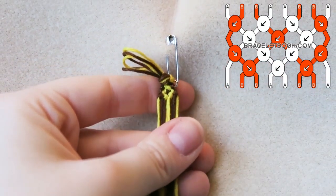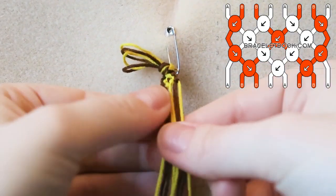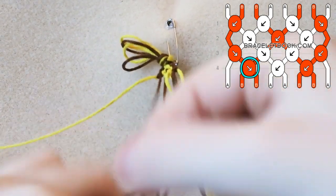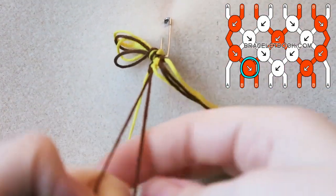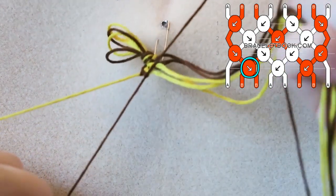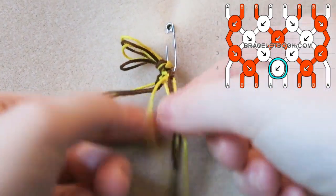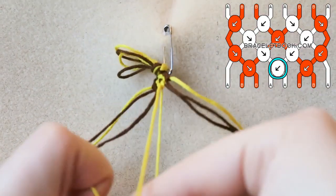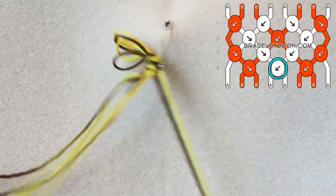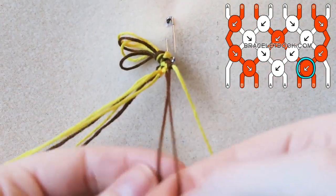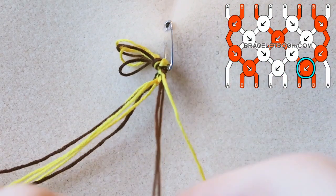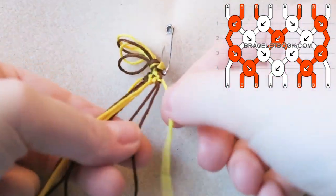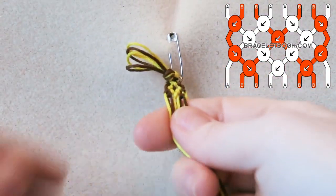We can already see a diamond taking shape, which is very exciting. Now we're going to finish off this pattern repeat by knotting the two brown together, then the two yellow, and then the two brown. Then we simply go back to the start of the pattern and do that all over again.